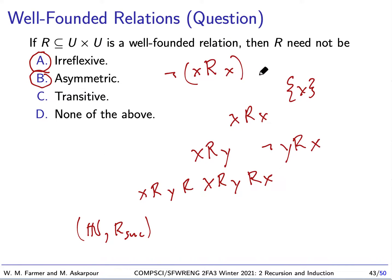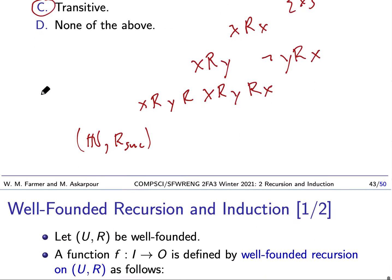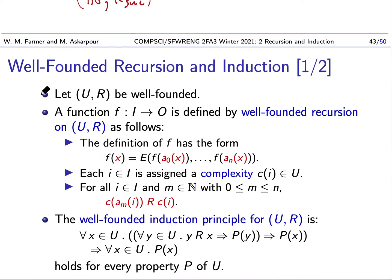So to summarize: a well-founded relation needs to be irreflexive, needs to be asymmetric, but does not need to be transitive. The question asked what it need not be — the answer is transitive.